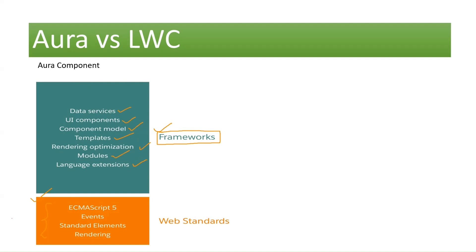The Aura component framework is a dedicated Salesforce UI framework for developing single-page responsive applications for mobile and desktops. Now, what is the problem with Aura? There are a few disadvantages. First, components built using the Aura framework had compatibility issues with browsers like Internet Explorer. Second, any developer familiar with JavaScript cannot directly jump in and start writing Aura components — they need to understand the specific Salesforce framework and get trained on it.